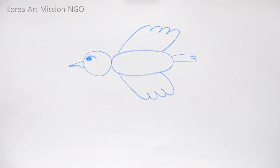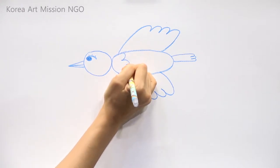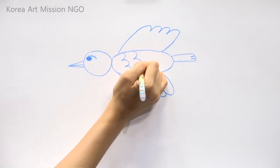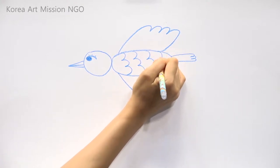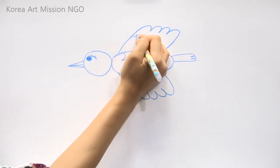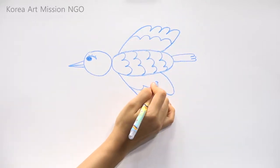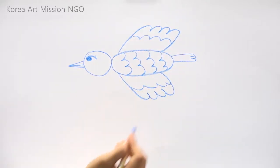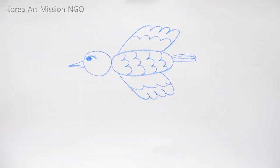How about dividing it here? Let me draw more convex lines on the bird's wings. Now I have drawn the bird.